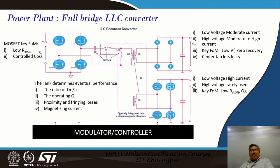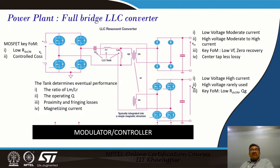Now let's look at the power plant of the full bridge LLC converter. We have chosen a full bridge LLC converter here — the same logic applies when targeting half bridge LLC converters — but we are showing full bridge because the demonstrations we will show, the 2.5 kilowatt and 6 kilowatt systems, are all implemented using full bridge LLC converters. The key figures of merit for the full bridge MOSFETs are very low RDS(on) and controlled COSS.